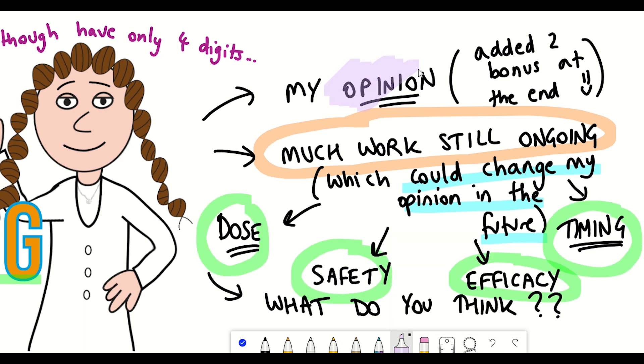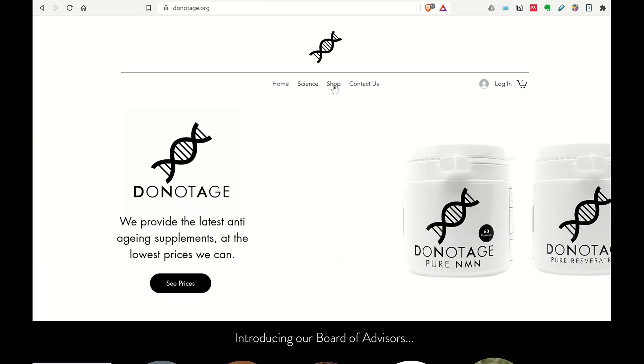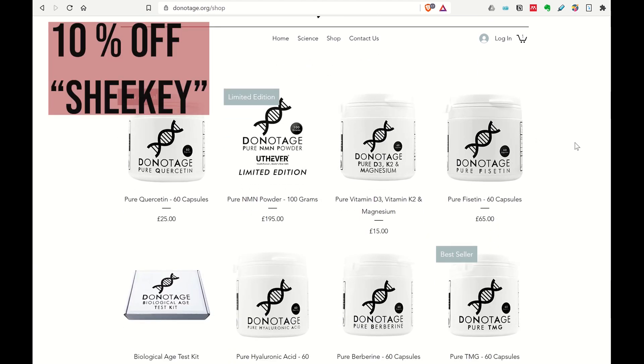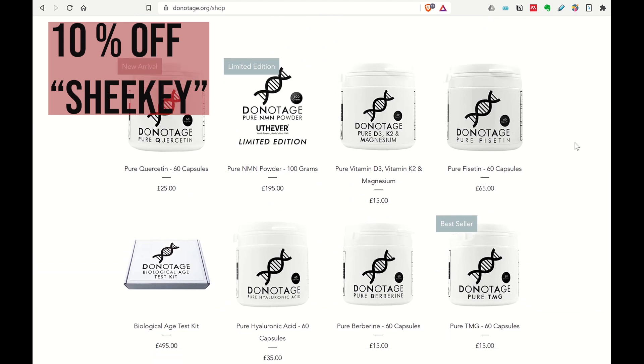In fact, some of these compounds are not even necessarily available to you at the moment. However, some of them are, and if you are interested, you can get 10% off at donotage.org if you use the discount code SHIKI. But please consult with your doctor and do your own research first.